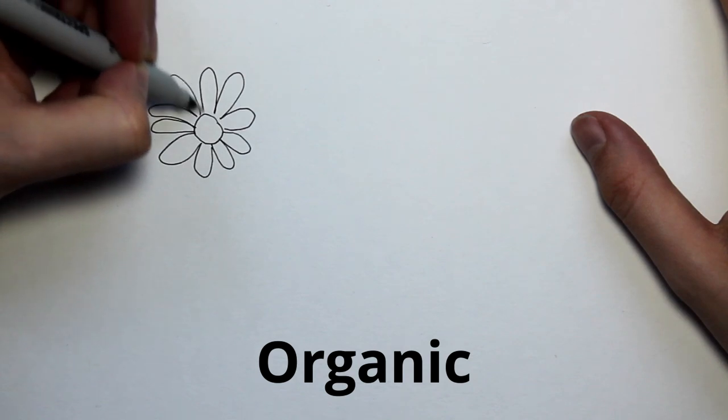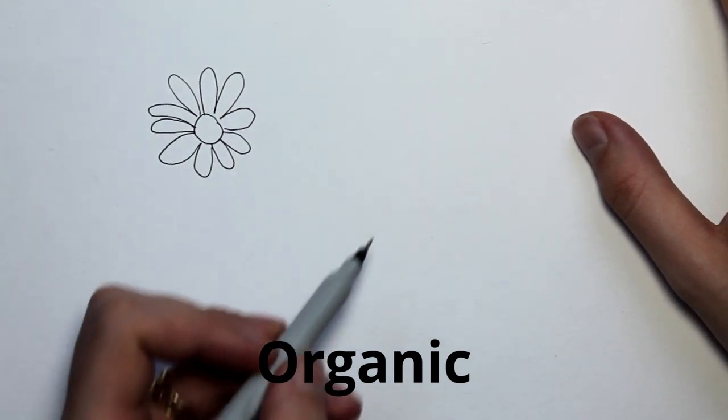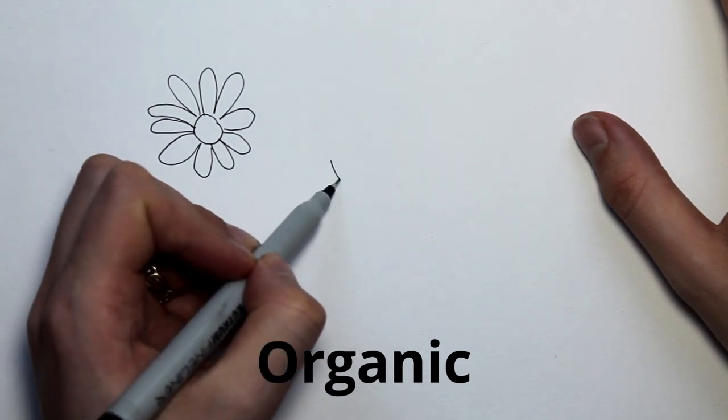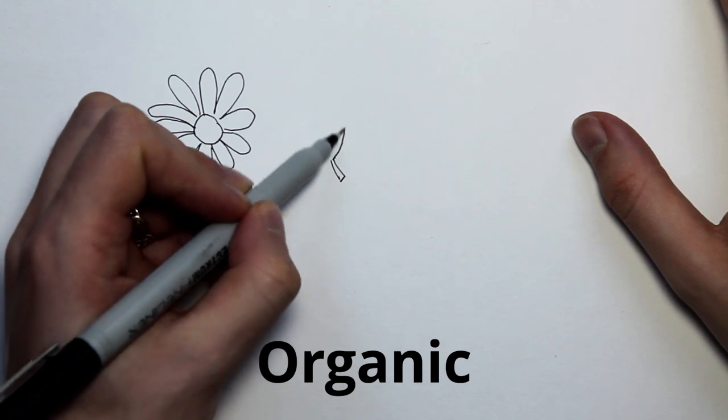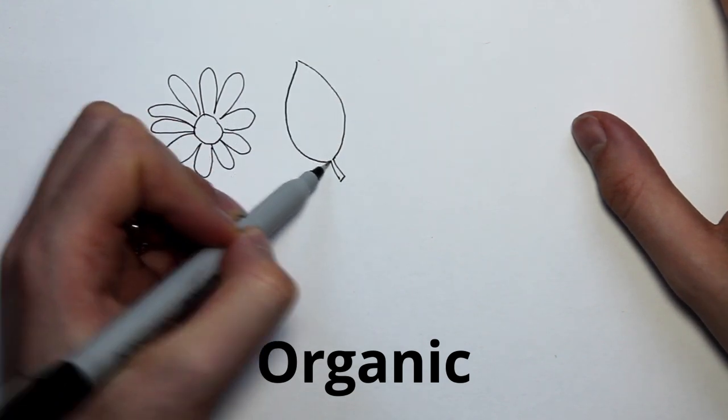All shapes fall into one of two categories: organic or geometric. Organic shapes are shapes that are found in nature. Organic shapes generally do not have their own name and are instead described by what they look like, for example, a flower or a leaf.